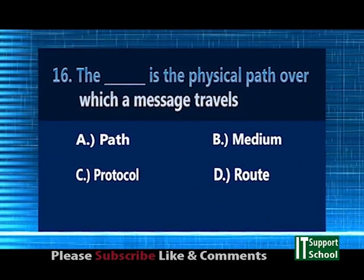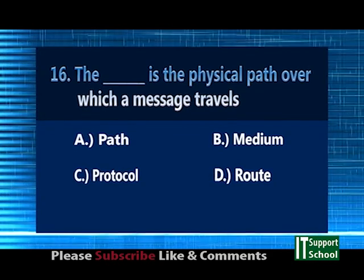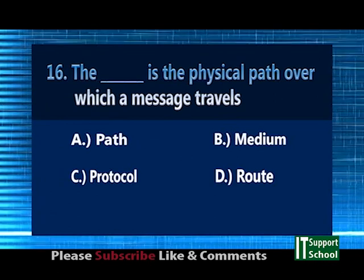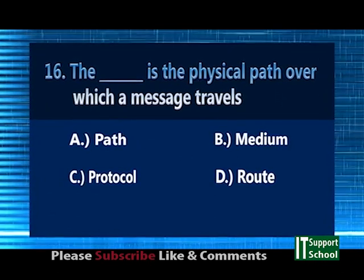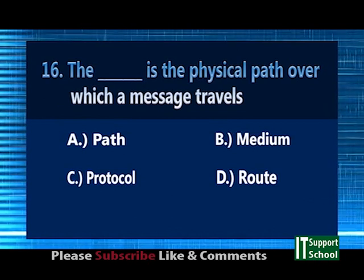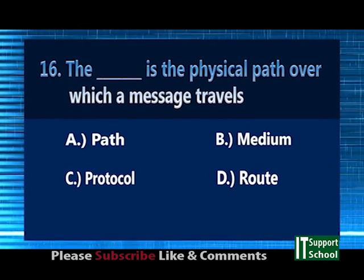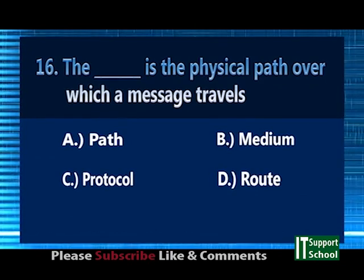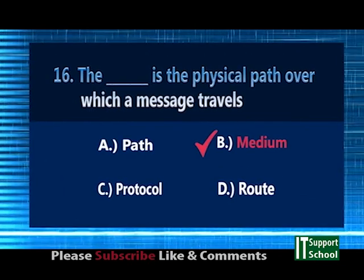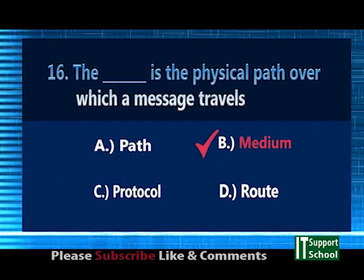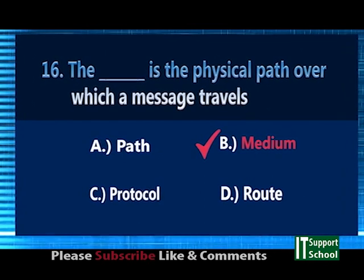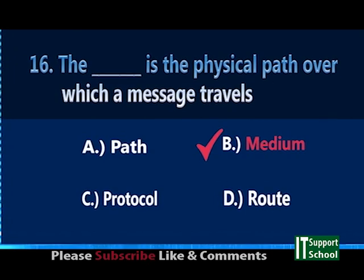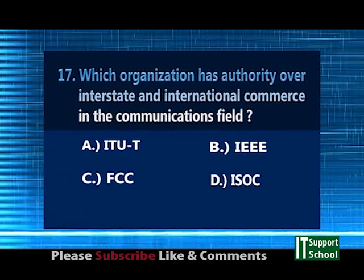Question number 16. The blank is the physical path over which a message travels. A. Path, B. Medium, C. Protocol, D. Route. Answer: Option B, Medium.